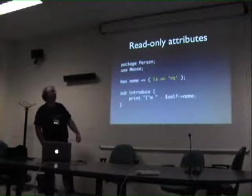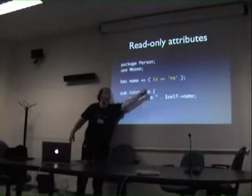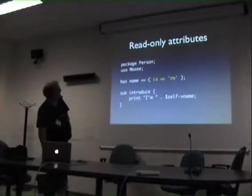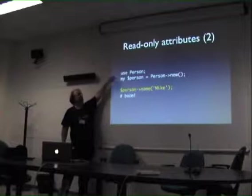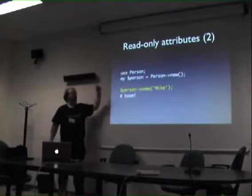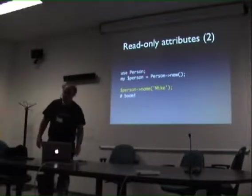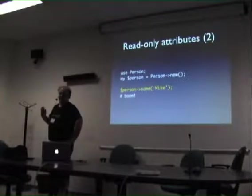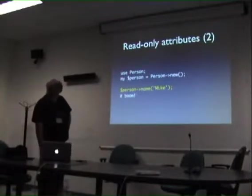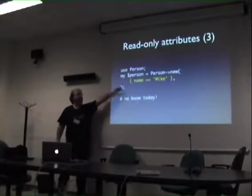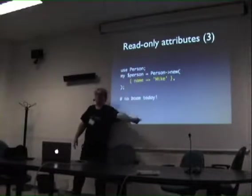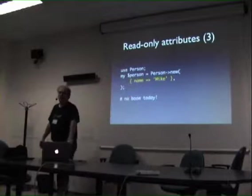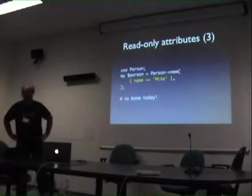What if you don't want to change names? Instead of saying `has name => (is => 'rw')`, we can say `is => 'ro'` for read-only. And we now say `use Person`, `my $person = Person->new`, `$person->name('Mike')` - and it complains because we tried to set the value of a read-only attribute. If you think about it, that's not terribly useful because you've got to set it somehow. What Moose actually provides is that in the constructor you can pass a hash of name-value pairs which assigns the attributes. Once constructed, you can't change that value.